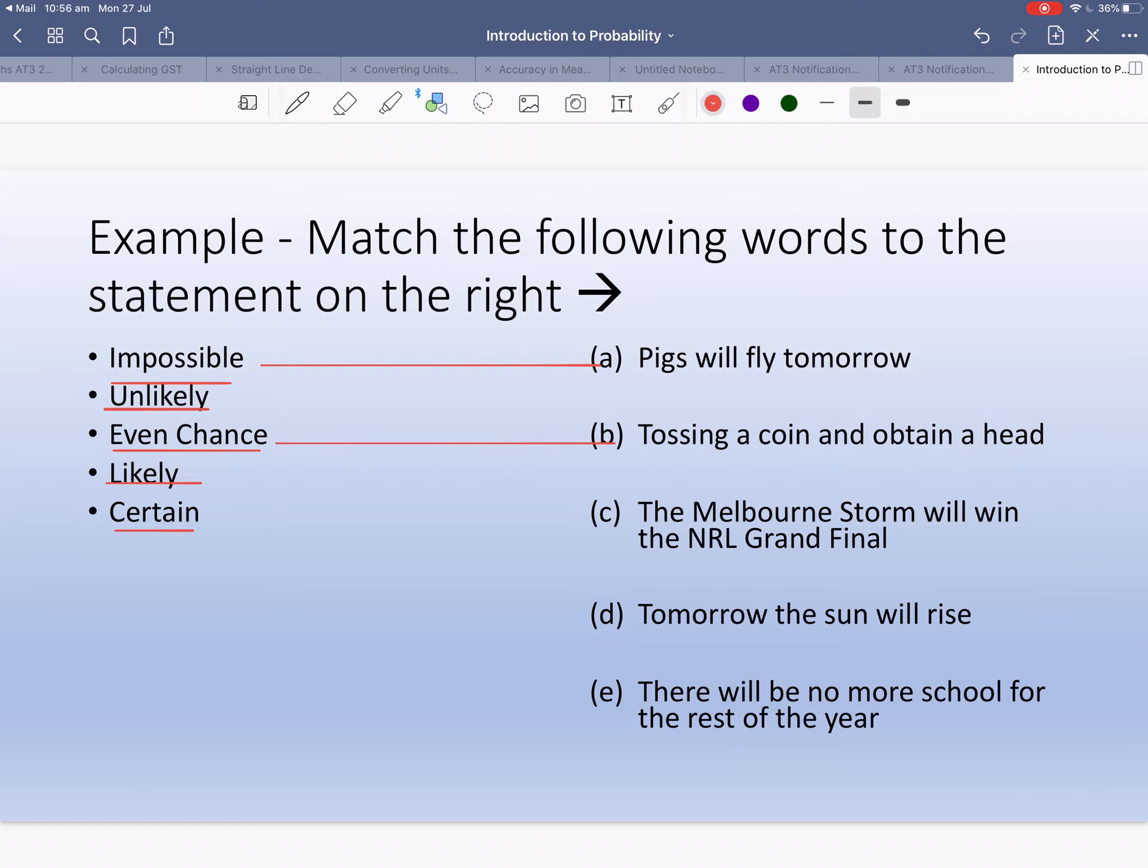I'm continuing on. The Melbourne Storm will win the NRL Grand Final - I almost feel like this is certain, but I'm going to go likely. Tomorrow the sun will rise - I think I used that as an example, so that's certain.